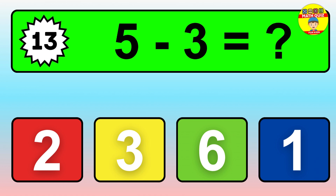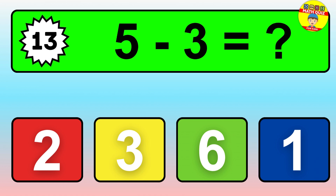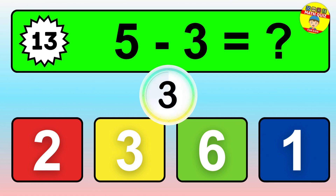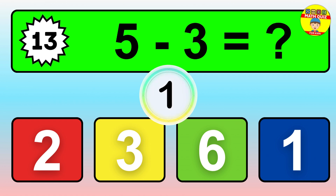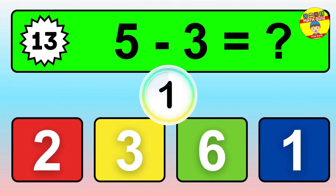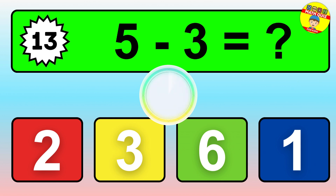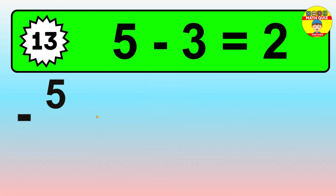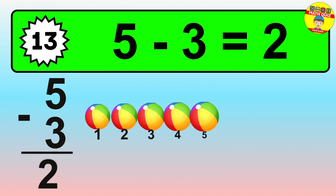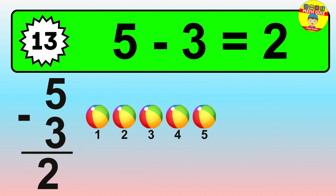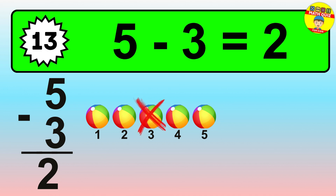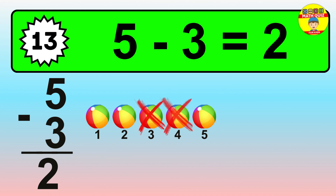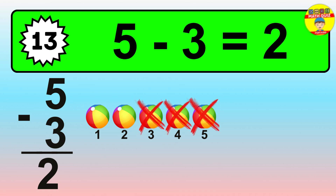Question thirteen: five minus three equals what? So the answer is five minus three is two. Let's count it: one, two.